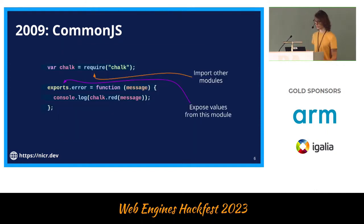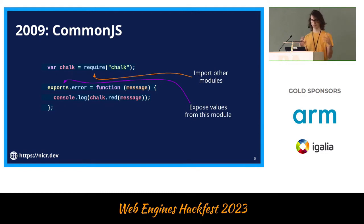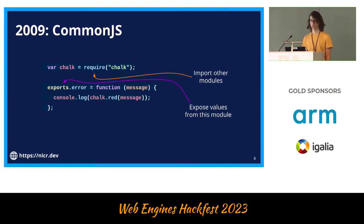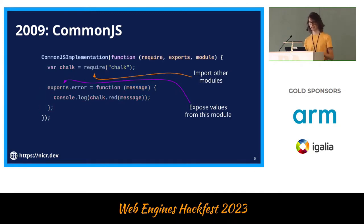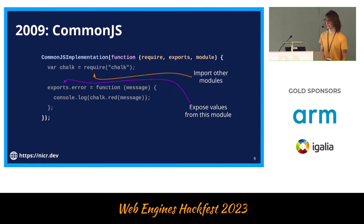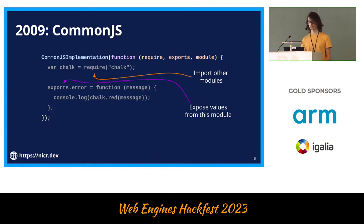For those who don't know how CommonJS looks like: we have this require function which loads a file and returns some object. And to export values from our modules, we have this exports object to which we just assign variables. When we import this module, the require function returns the exports object of this other module. This doesn't just work as-is because require and exports are not really something defined in the browser or in a JavaScript standard, so there is a wrapper function that provides all these — require, exports, and other CommonJS-specific utilities.